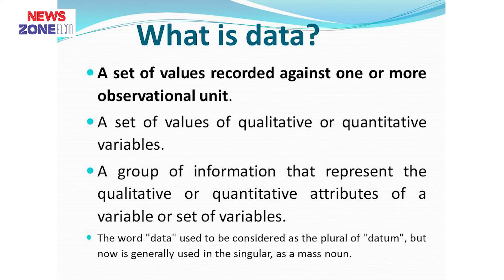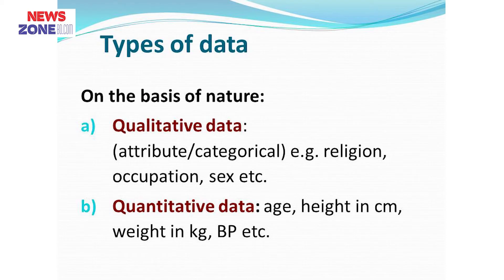Now let's see what is data. Data is a set of values recorded against one or more observational units. For example, a person is my observational unit and his weight is 40 kg, so 40 kg is a data. There are two types of data according to nature: qualitative data and quantitative data. Qualitative data are categorical data like religion, occupation, sex, etc.